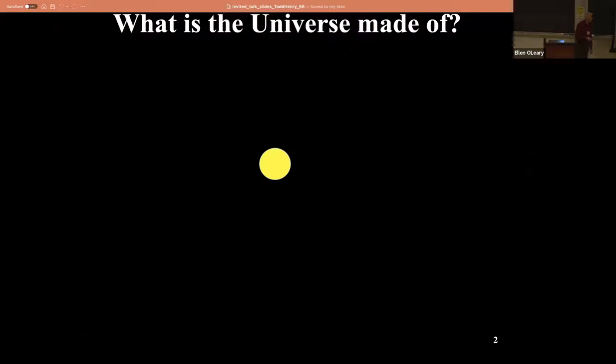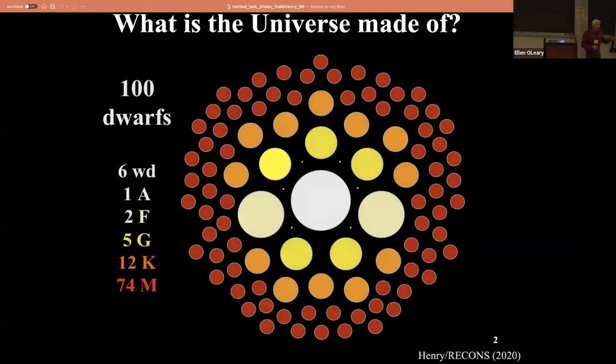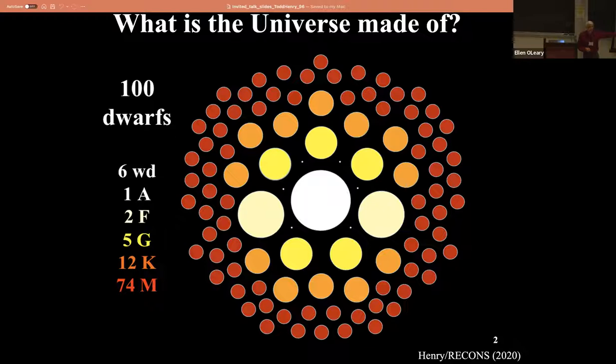Let's start putting the universe together with the sun. If you use astrometry, you can figure out how many stars of different kinds there are near the sun, because only using astrometry can you measure something called a parallax. And with a parallax, you can put together a volume-limited, volume-complete sample, and figure out what the universe is actually made of. Of all the stars out there, 74% of them are little M-dwarfs. We only knew that because we could do astrometry.